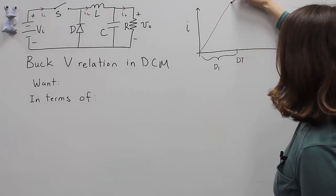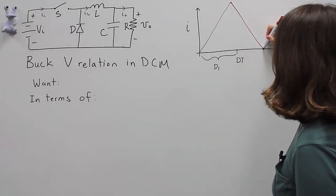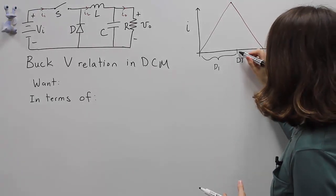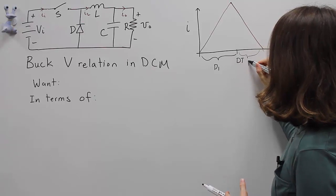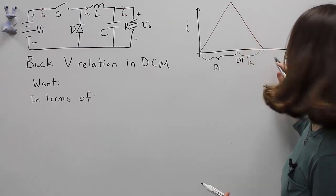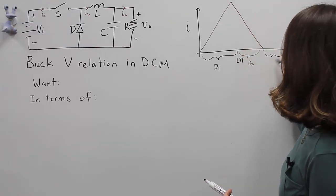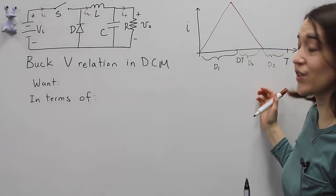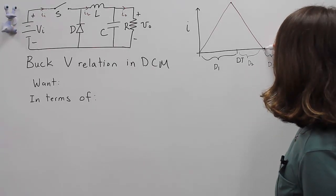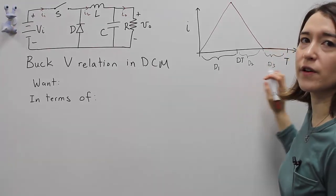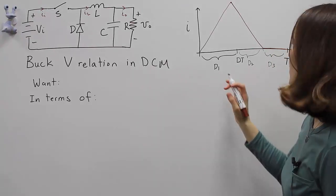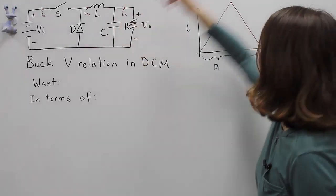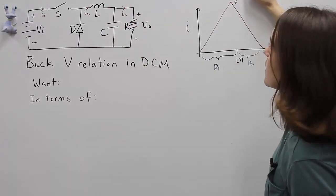Then after we turn off the switch, the inductor current will fall, and it will actually hit zero at some point. We're going to call this region D2 — so for this period it's decreasing. And then there's a certain period we're going to call D3, which is the duty ratio where it's at zero. So we're defining these three different duty ratios: D1, D2, and D3. This is the inductor current here, I'm going to label this as I_L.